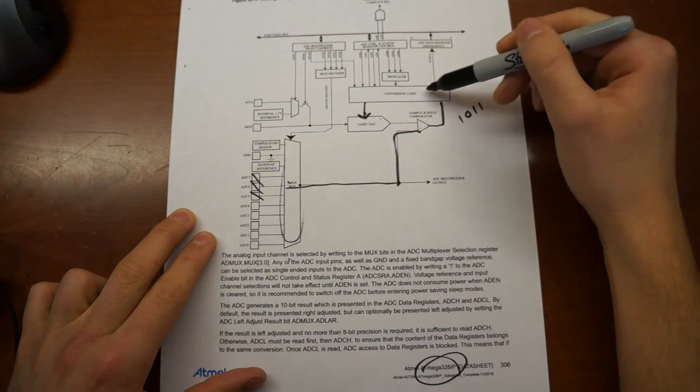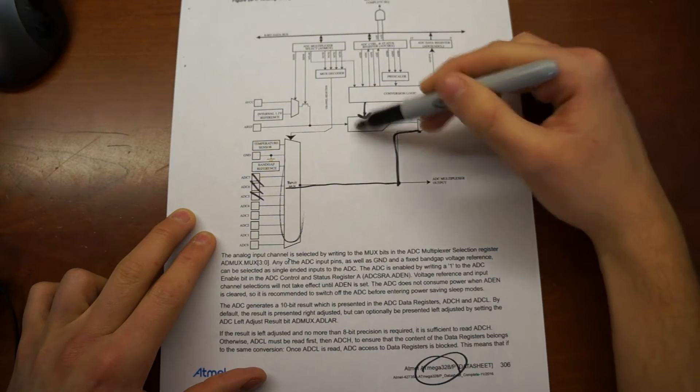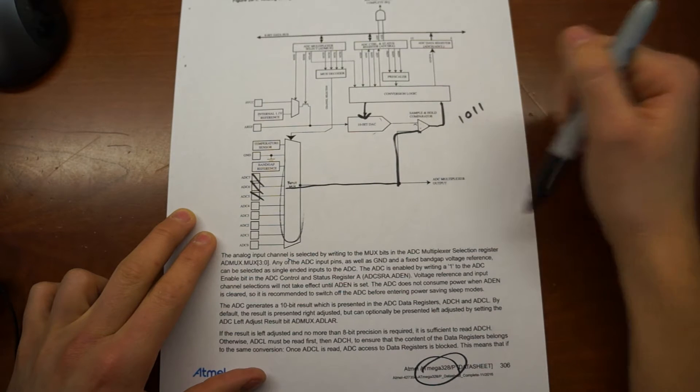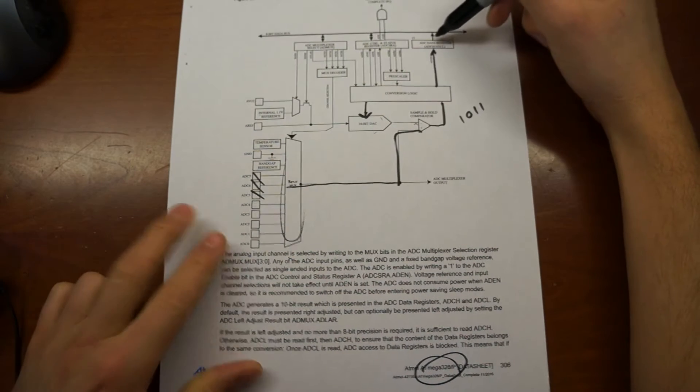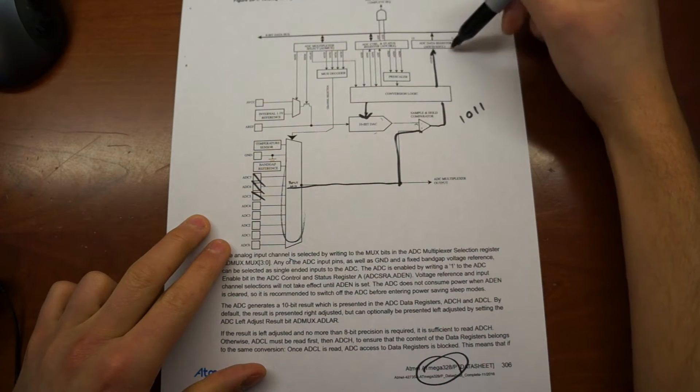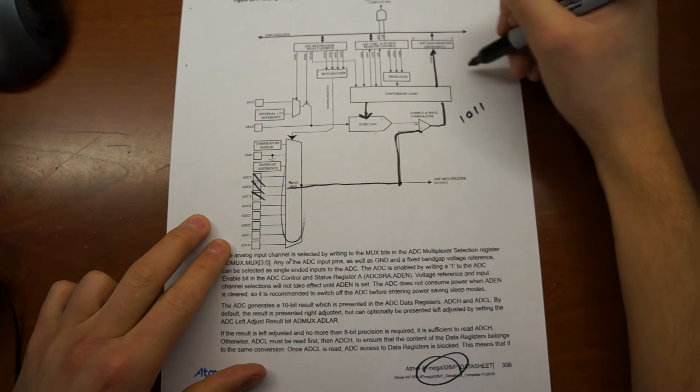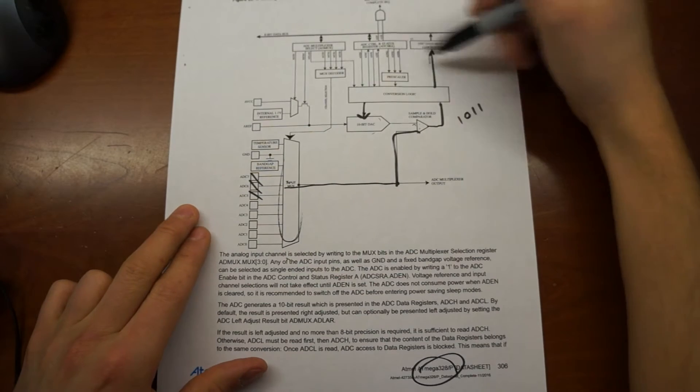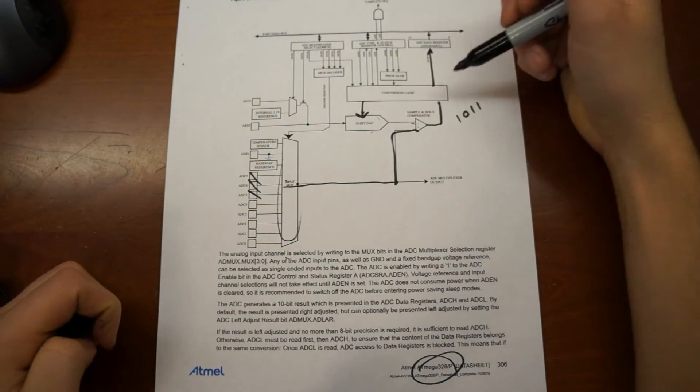And so you can see there's an arrow here. So that conversion logic is feeding back into the DAC. So the DAC can make its smart guess. And then, of course, back into the comparator. And so these are, ADCH and ADCL are literally just registers in the circuitry of the processor that you can access. And you can access those values of the ADC.